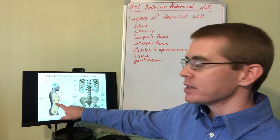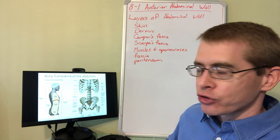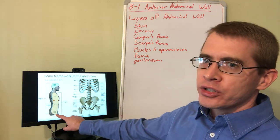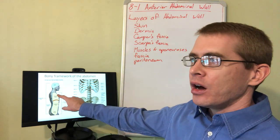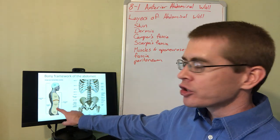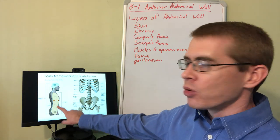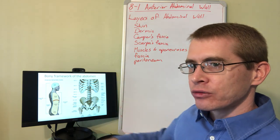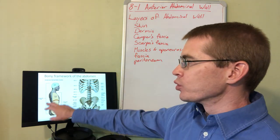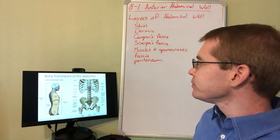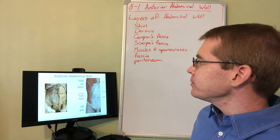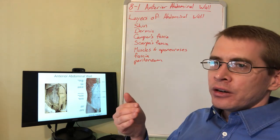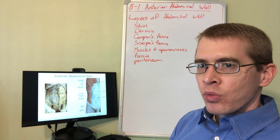There's a cranial, thoracic, abdominal, and pelvic visceral cavity. The ventral body wall is the dermal muscular fascial portion that separates the outside world from the visceral cavities, and of course there's a dorsal body wall as well. So now let's talk about the layers of the abdominal wall.